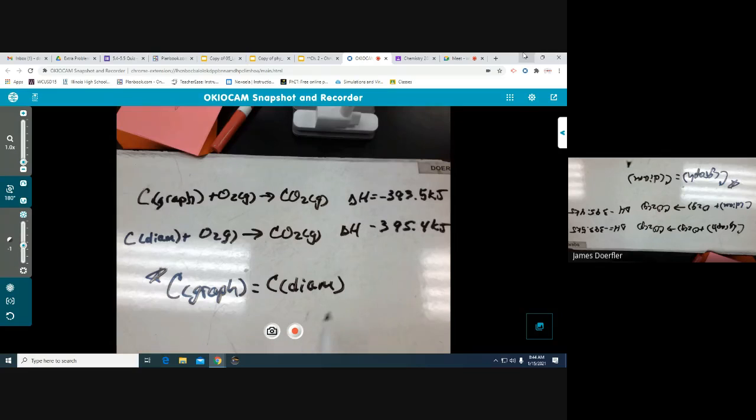So C as graphite plus O2 gas yields CO2 gas and an enthalpy change of negative 393.5 kilojoules. Second equation was carbon as diamond plus O2 gas yields CO2 gas and an enthalpy change of negative 395.4 kilojoules. Now our target equation is C as graphite is equal to C as diamond. So this is our target equation right here.